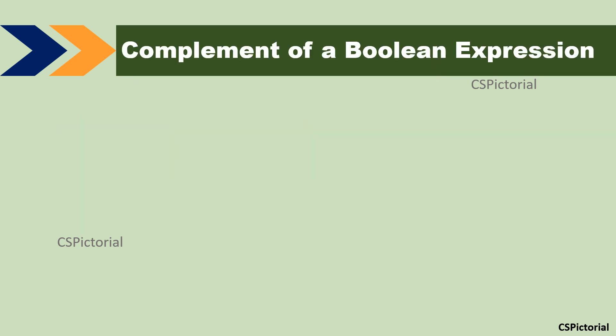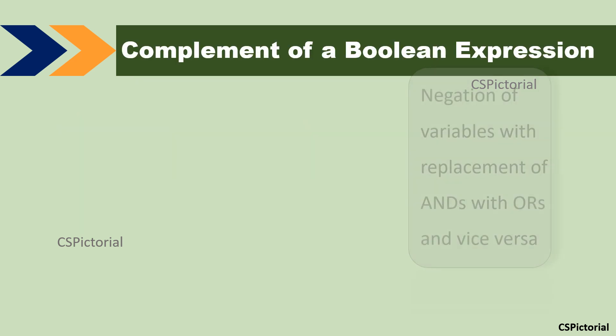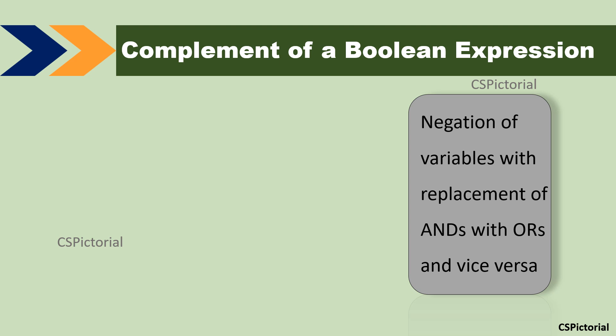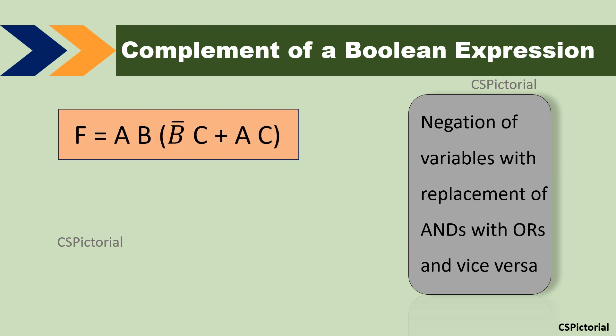Complement of a Boolean expression. The complement of a Boolean expression is the negation of the variables with the replacement of ANDs with ORs and vice versa. This is a Boolean expression F. We will find the complement of this expression as F bar. To find the complement of a Boolean expression, go through the expression and replace each item with its complement.